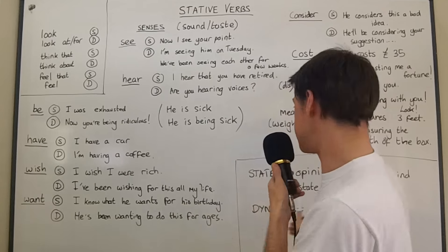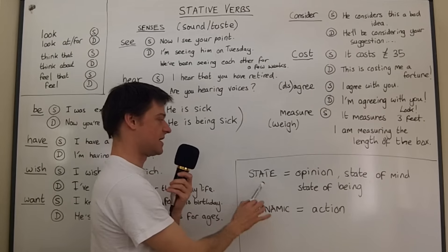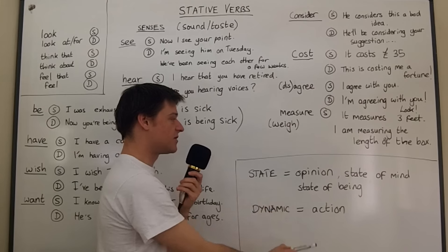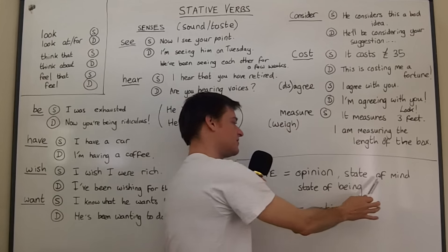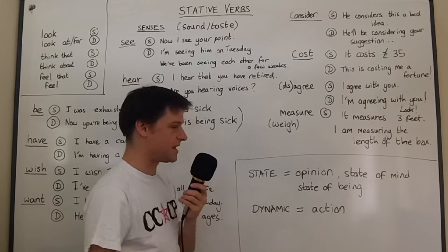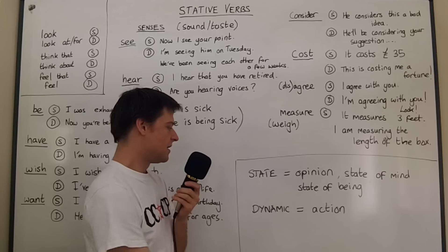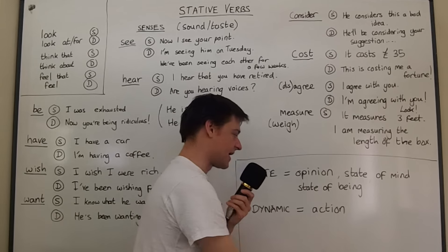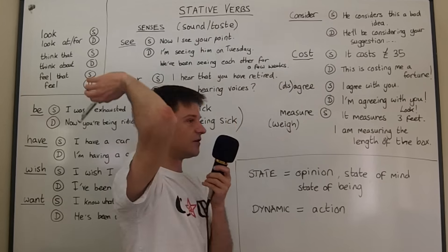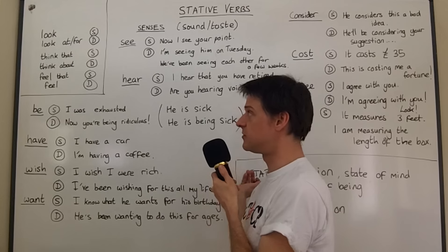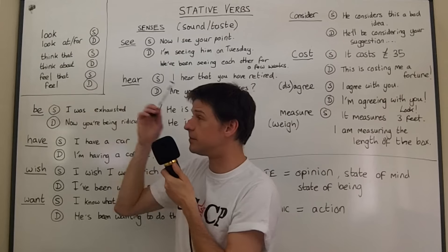Really, the difference can be summed up in a nutshell. State verbs are about opinions — they express states of mind or states of being, how things always are. Dynamic verbs express actions. I think this applies for all of these verbs and for these original examples.